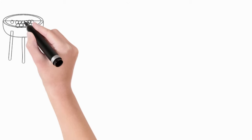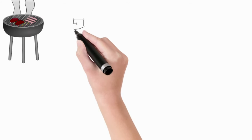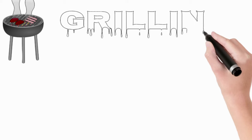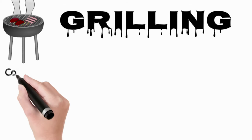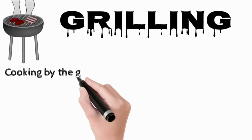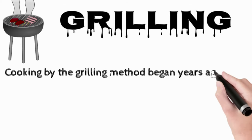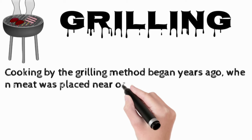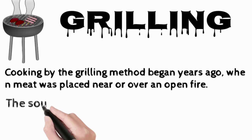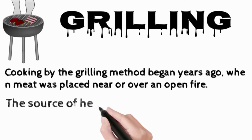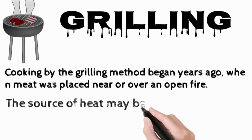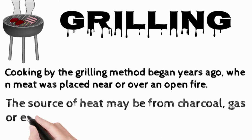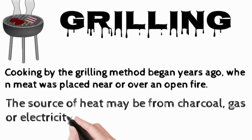Grilling: cooking by the grilling method began years ago when meat was placed near or over an open fire. The source of heat may be from charcoal, gas, or electricity. Meat is seasoned with salt and pepper, brushed on both sides with oil, and kept on top of the grill bar, with heat radiation coming from the bottom to cook the meat.